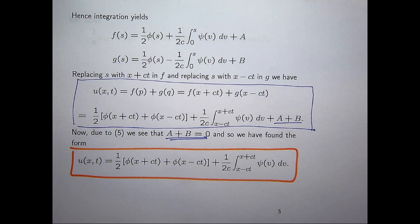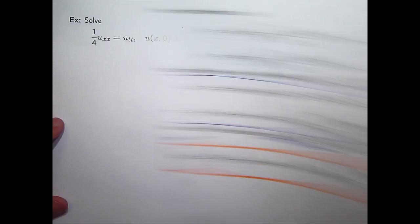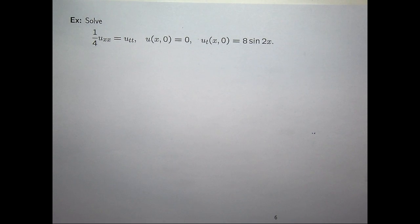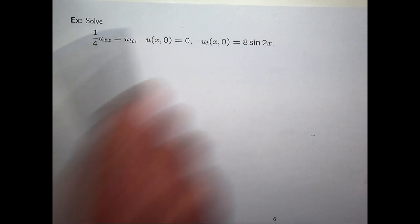So, let's have a look at an example and see how it works. We're given a wave equation with some initial conditions. The wave speed here would be one half. The initial displacement is just the zero function. And the initial velocity is a periodic function, eight sine two x.